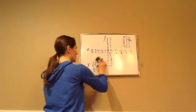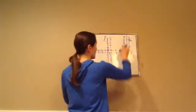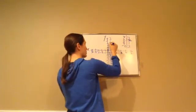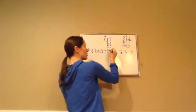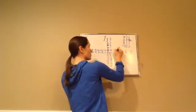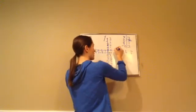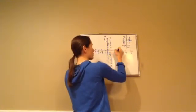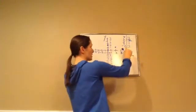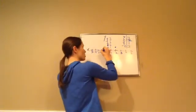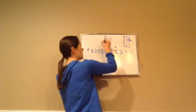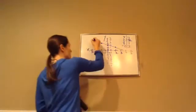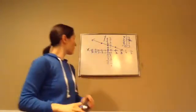Now let's graph those points. For (0, 2): x is 0 so stay in the middle, go up 2. For (2, 1): go right 2, up 1. For (-2, 3): go left 2, up 3. As you can see, we've got a line — you just draw that line, and that's y equals negative one-half x plus 2, graphed.